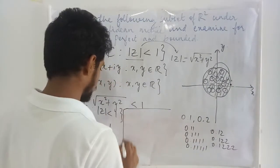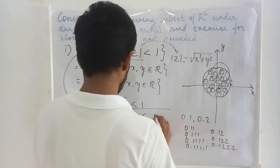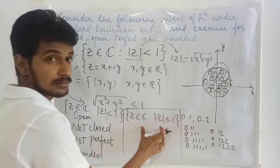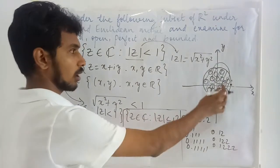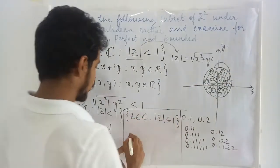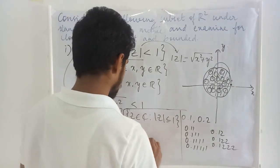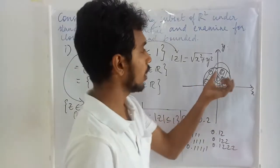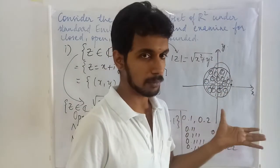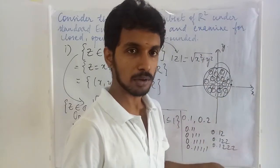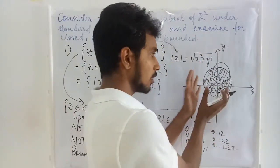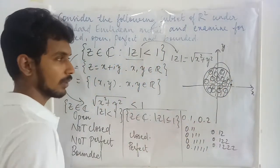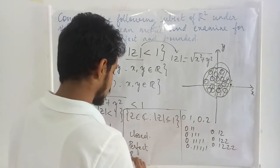Now let us take the same set but with |z| ≤ 1, using the same argument. Here you have included all the limit points inside it; therefore, the set becomes closed. All the points inside the set are limit points, and the boundary points are also included. Therefore, all the points in this set are limit points. It satisfies both conditions to be perfect. Therefore, we can say this set is perfect as well as bounded.